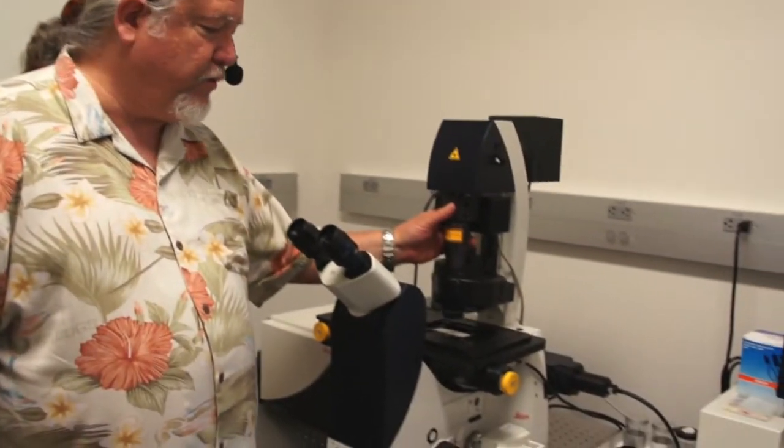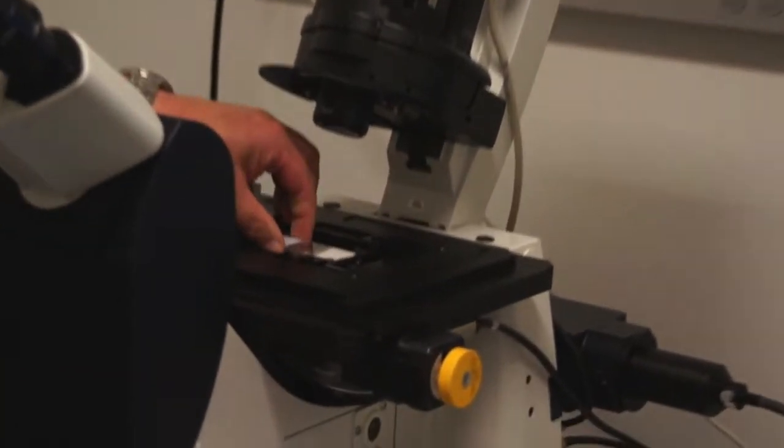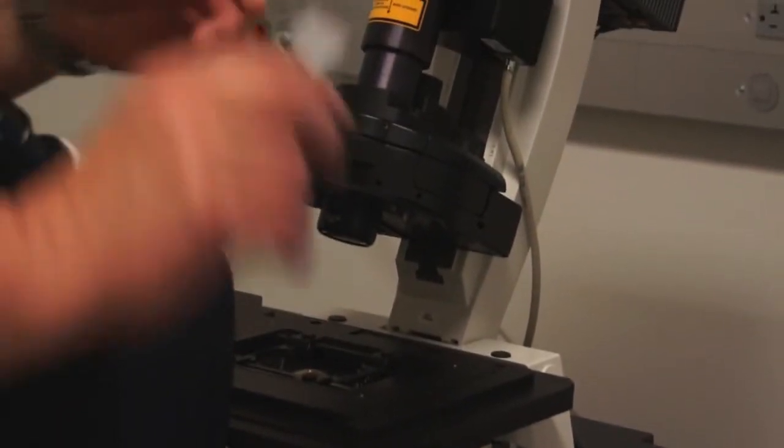Before we end our current session, it's important to follow proper shutdown procedures for using the light microscope. The first thing we do is we rotate our condenser out of the way. We take our specimen off the stage and set it aside.